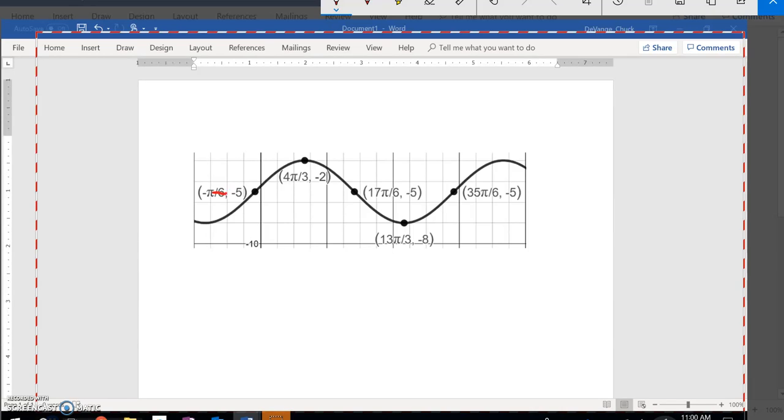So one thing that I notice is my midline is right here at negative 5, so I know it's going to be negative 5, and then if I look at my offset in both directions, it looks like it's by 3. So it's off by 3, so it's going to be plus 3. It's starting at the midline going up, so that's a positive sign, so it's sine.